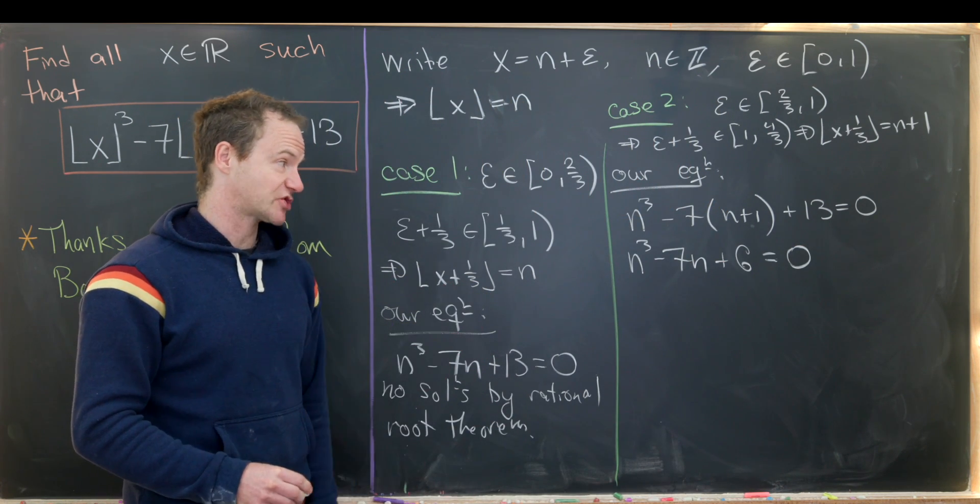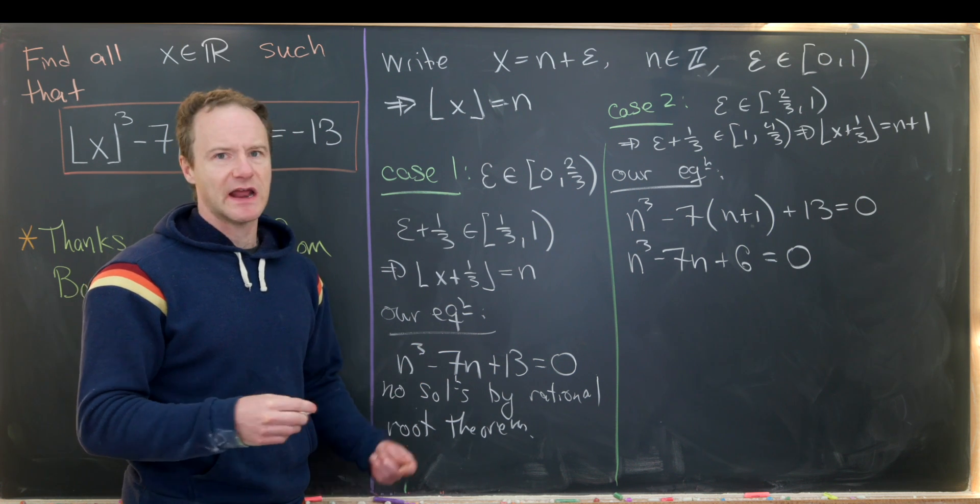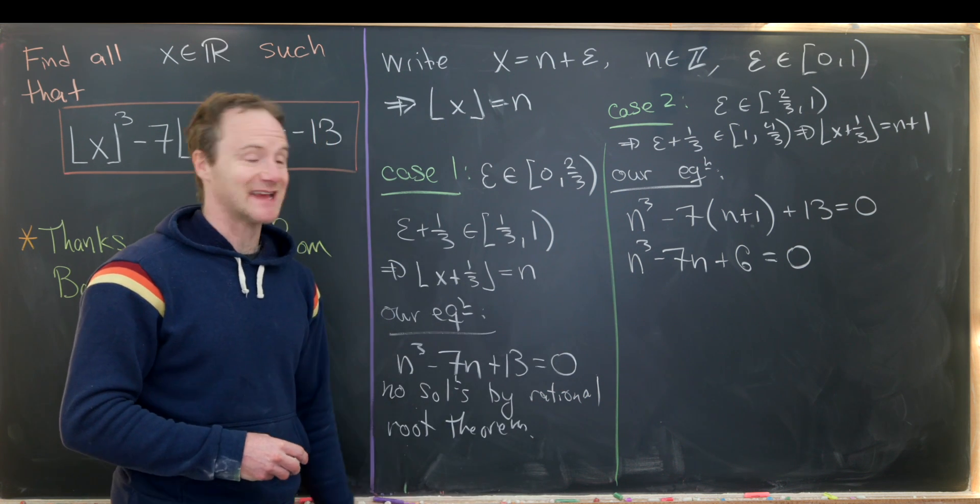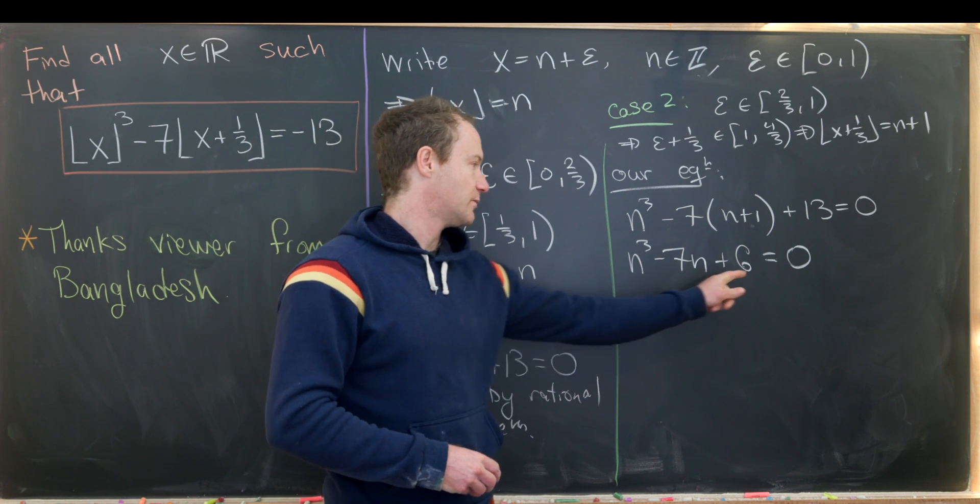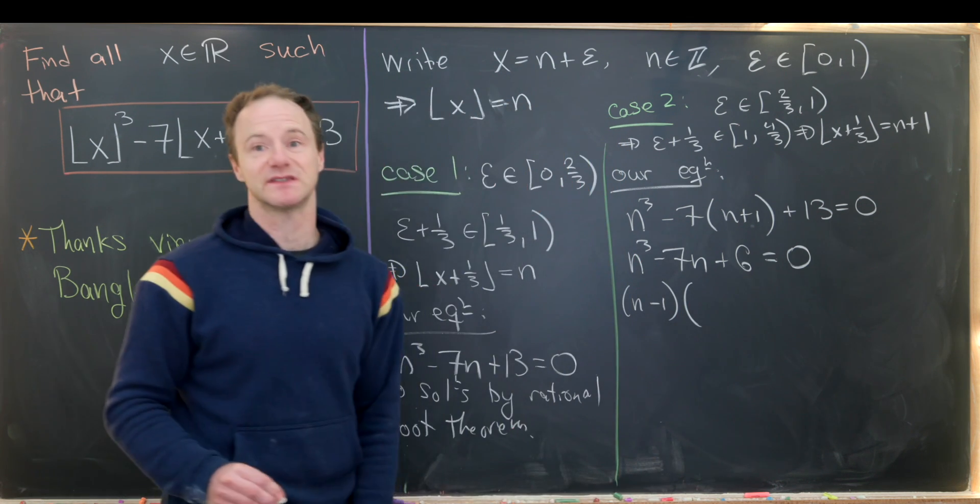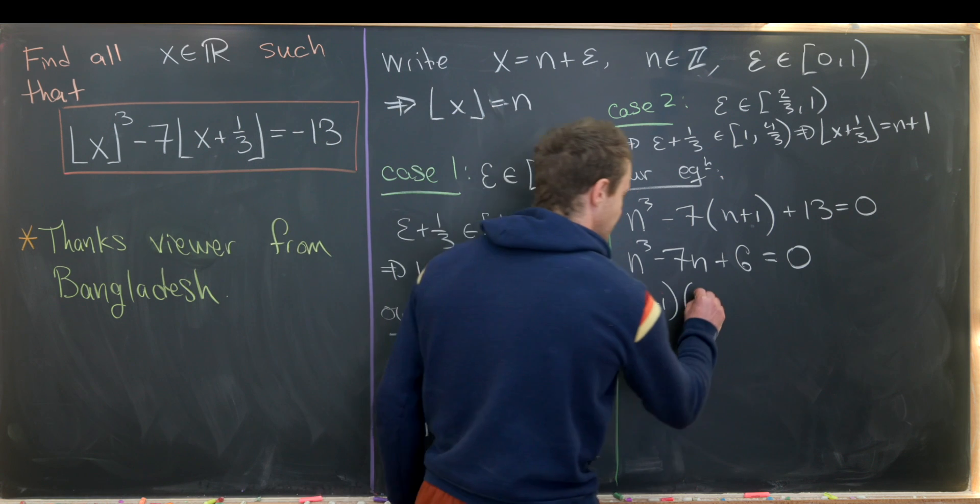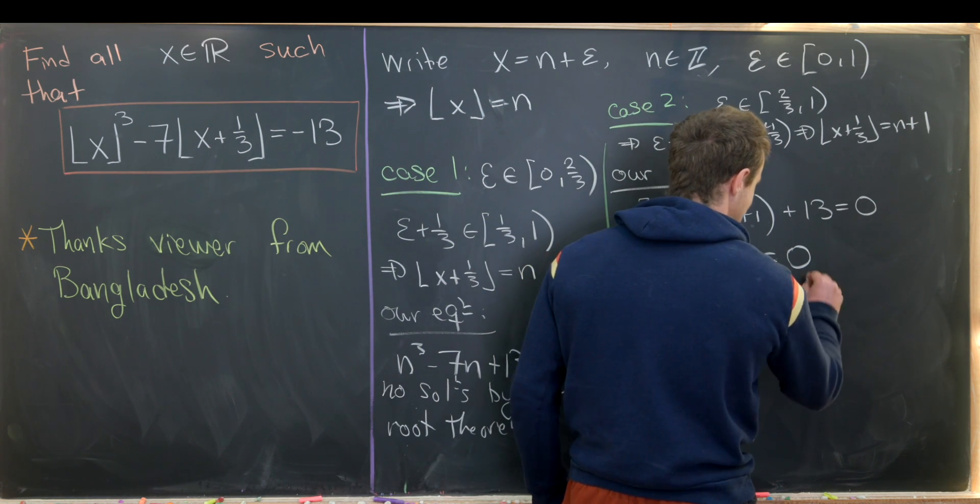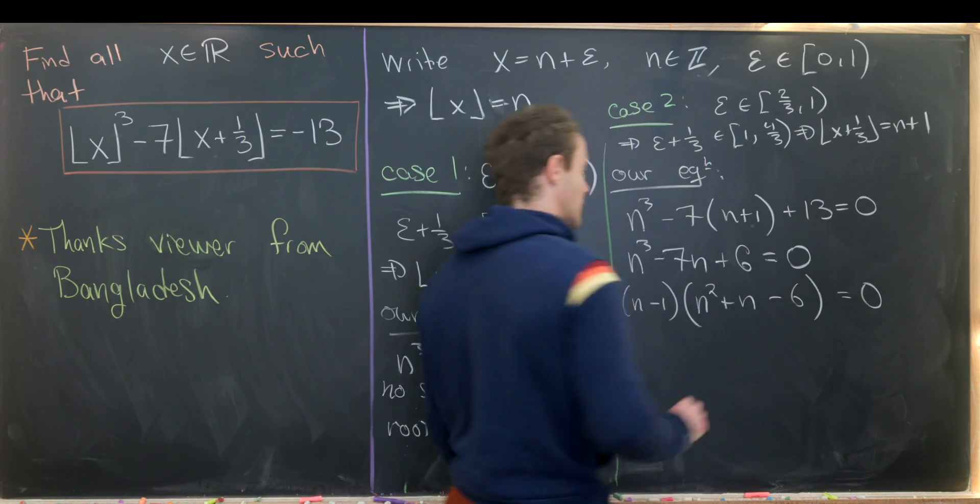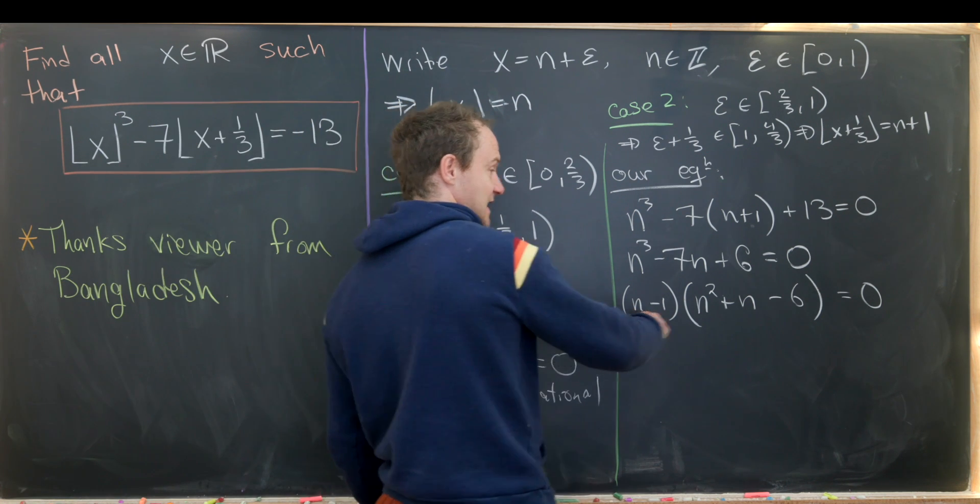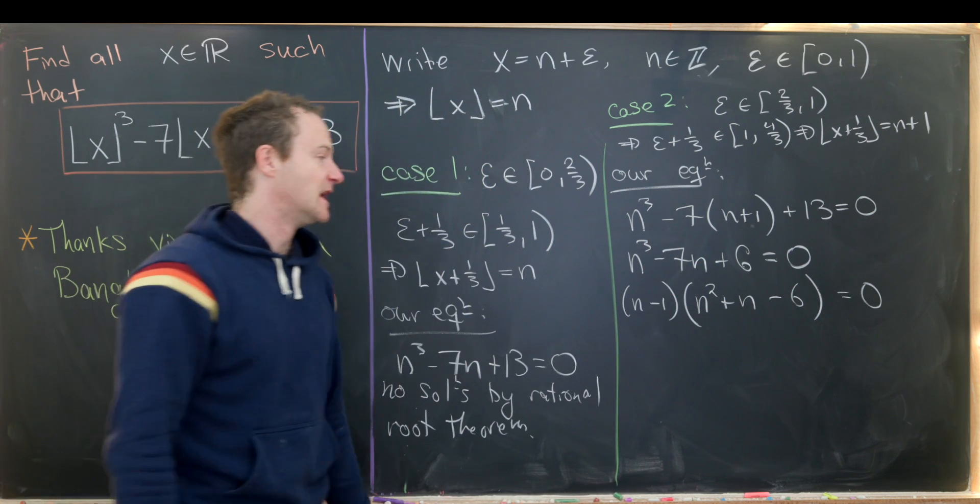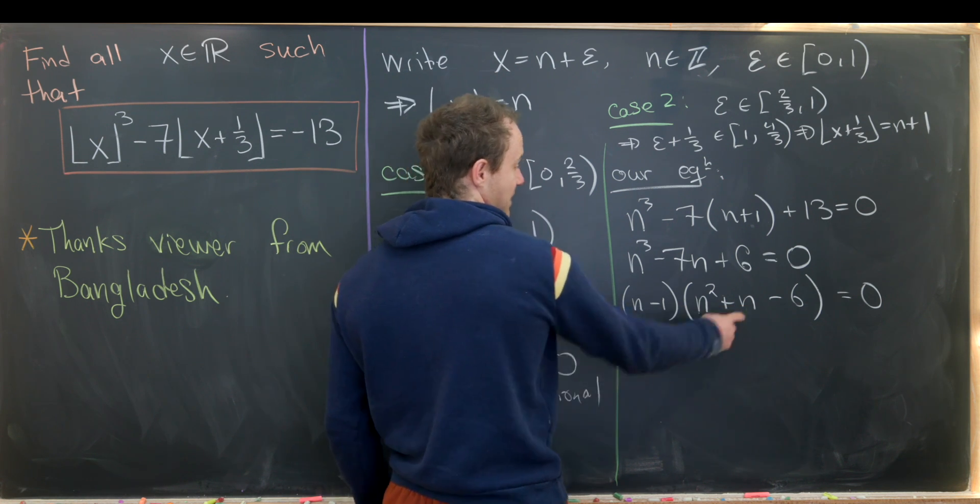Now we can use the rational root theorem again to guess some rational roots. And after we guess a rational root, we can divide out and get a nice factorization here. So let's notice that n equals 1 satisfies this equation. Because we have 1 plus 6 is 7 minus 7 is zero. So that means we know we should be able to write this as n minus 1 times something. So we know that it has to be an n squared here and a minus 6 here. Then we just have to figure out the coefficient of n. But playing around with it for a little bit, we'll see that a coefficient of 1 for n works. So notice here we'll have n times negative 6 is negative 6n minus 1 times n is negative n. Add those up to negative 7n. And then the n squared terms cancel because we have a negative n squared and a positive n squared term.